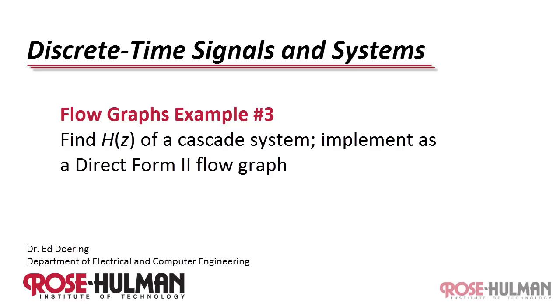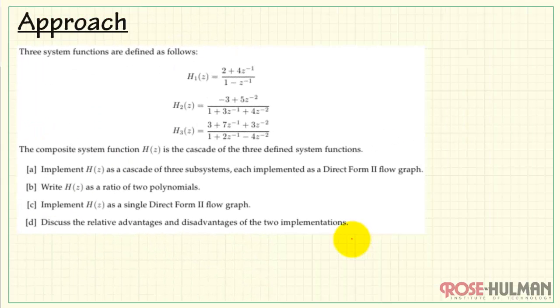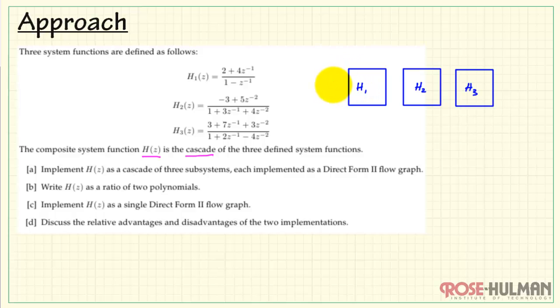This is FlowGraph's example number three. Find H of Z of a cascade system, and then implement it as a direct form to FlowGraph. Let's consider a general approach to this problem. We have three system functions defined like this. The composite system function H of Z is the cascade of these three defined subsystems.